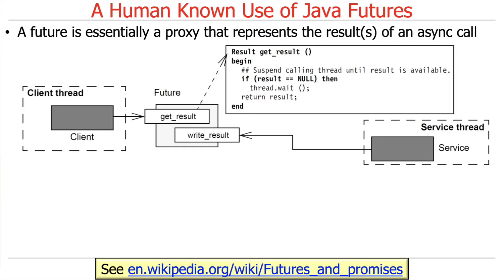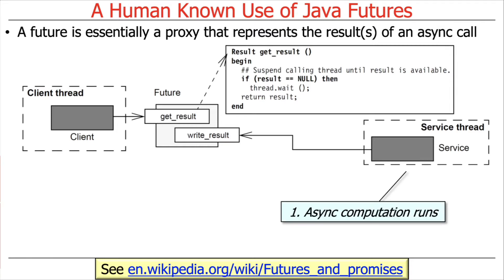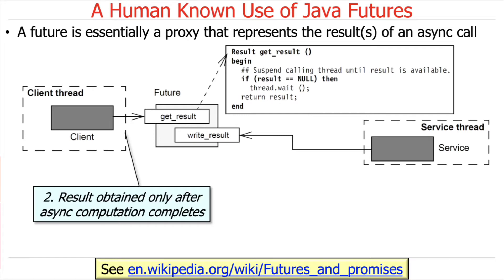A future is essentially a proxy that represents the results of an asynchronous call. So if you start a call that runs asynchronously, the asynchronous computation will run, and when you invoke the call, you will get back something called a future. That future can then be used to obtain the results after the asynchronous operation completes. There are some other things you can do as well, like cancel it and check to see if it's done.